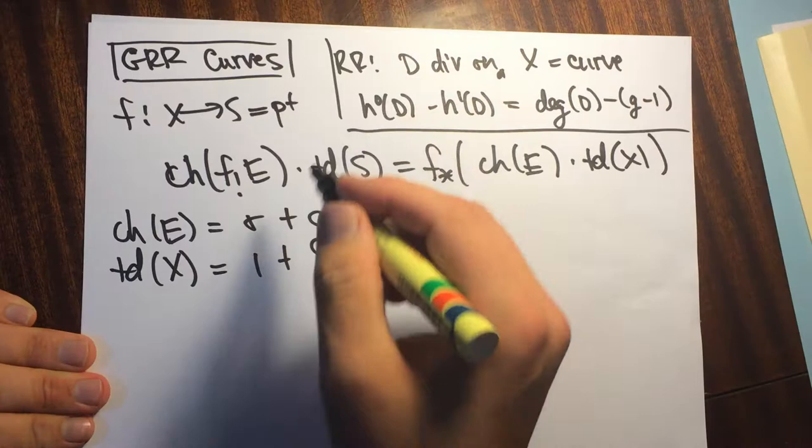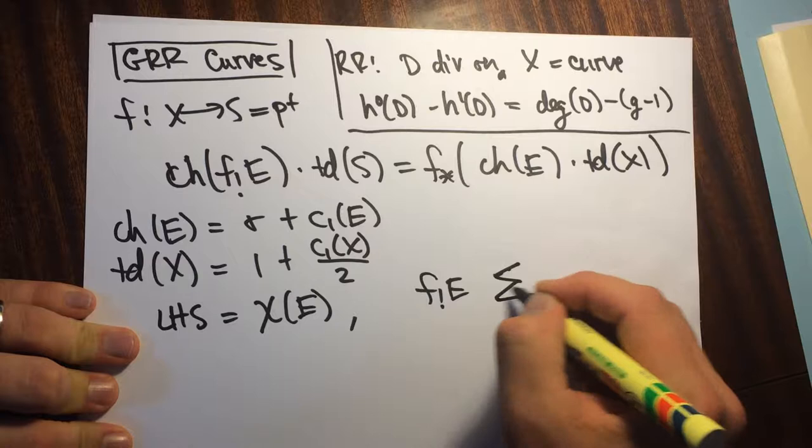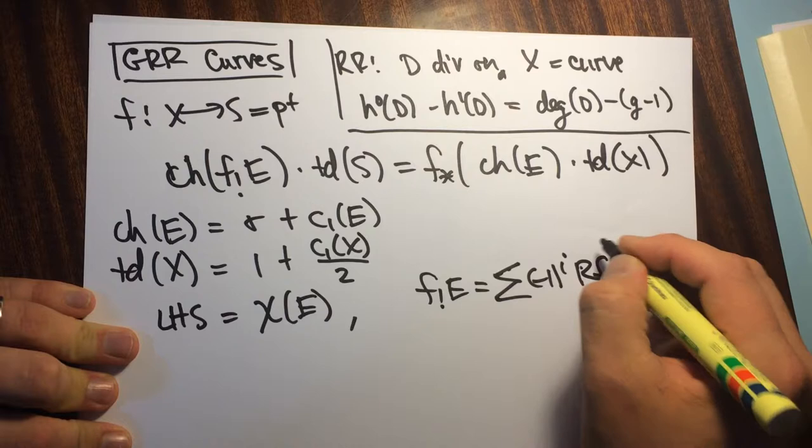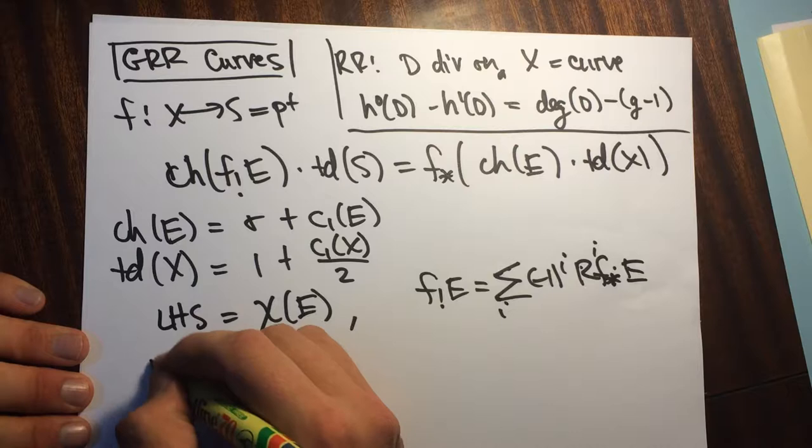When S is a point — so we have a curve over a point — then the left-hand side is just equal to the Euler characteristic of E, because this alternating sum of cohomologies gives the push forward of E.